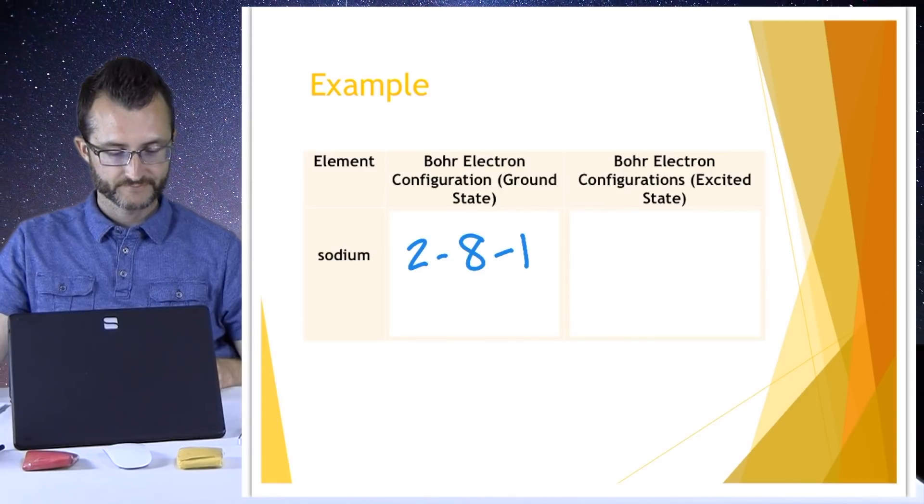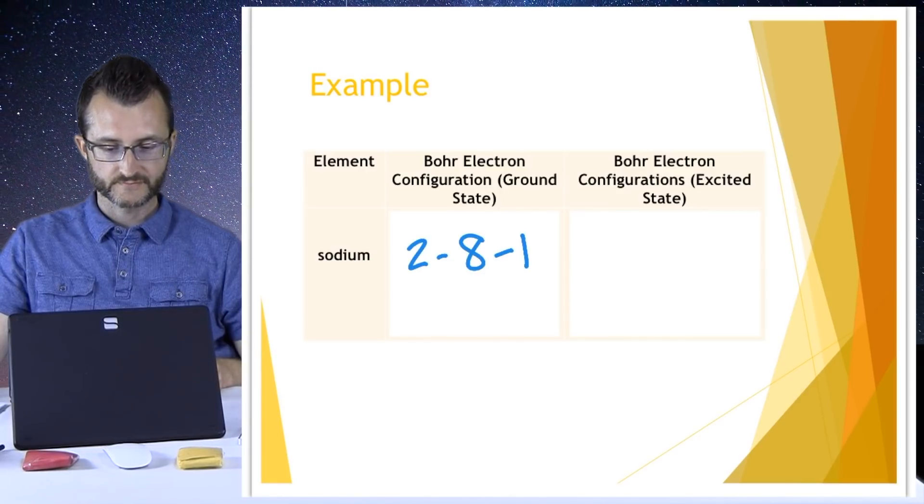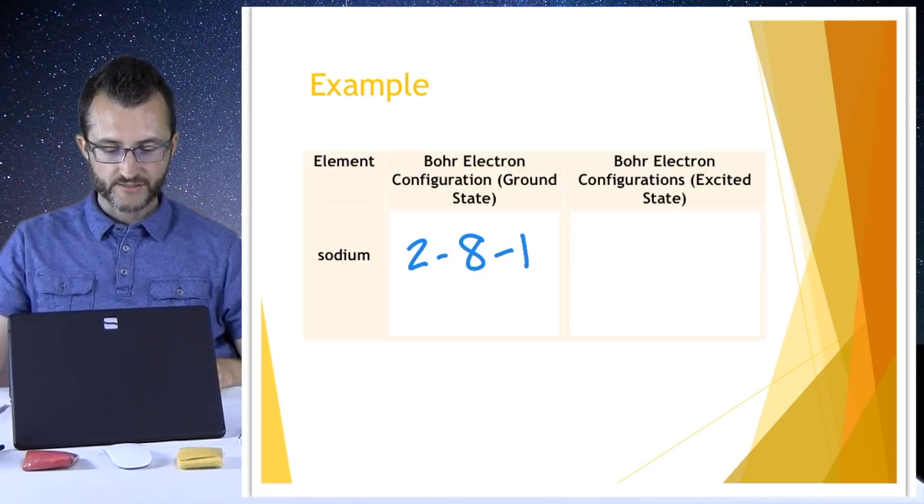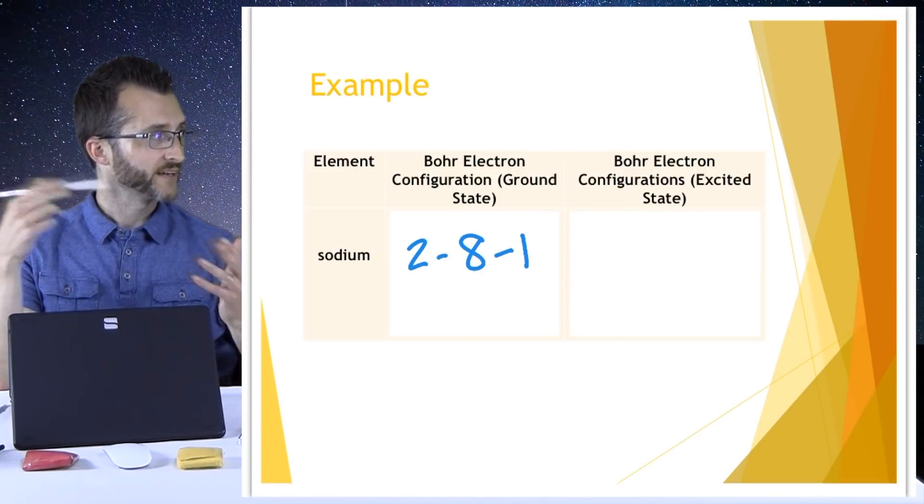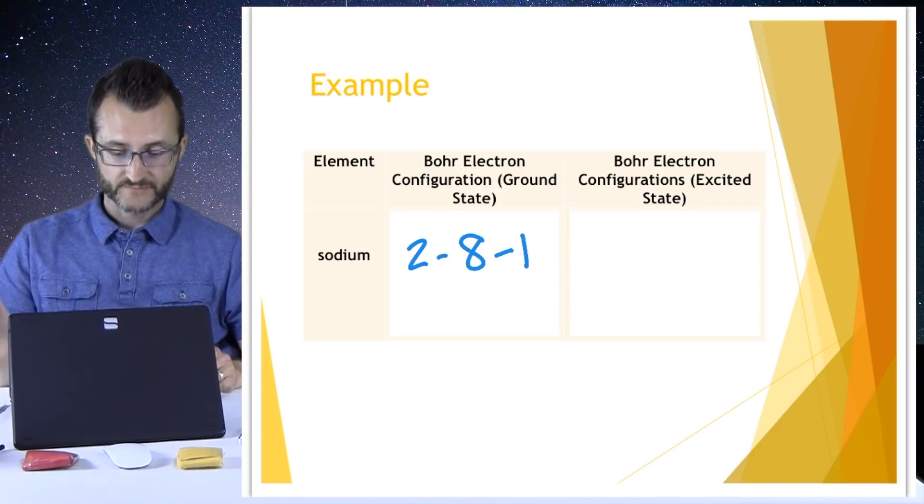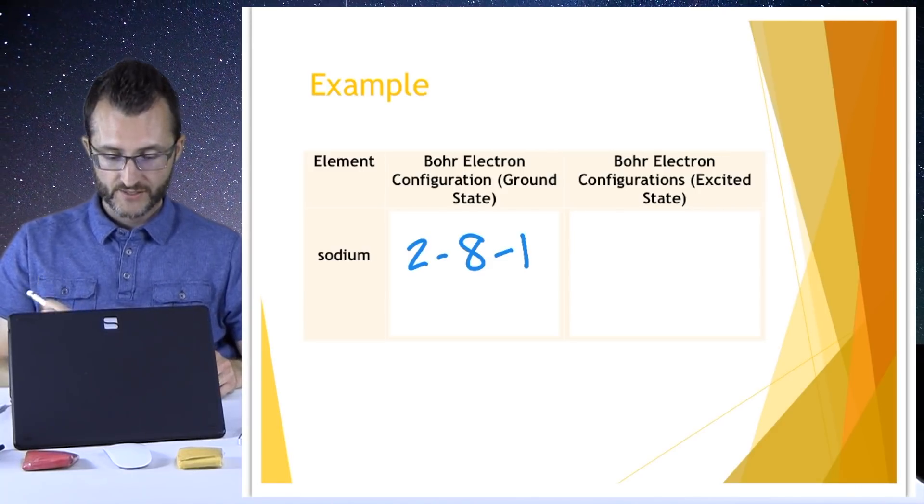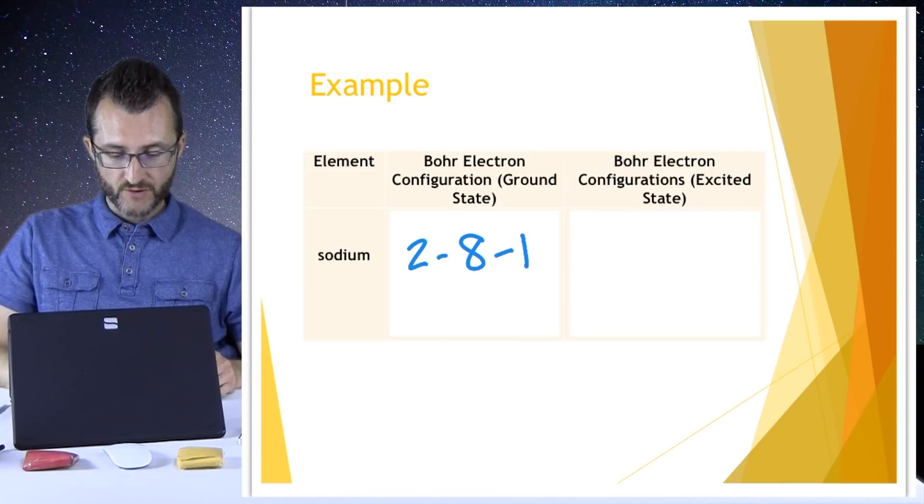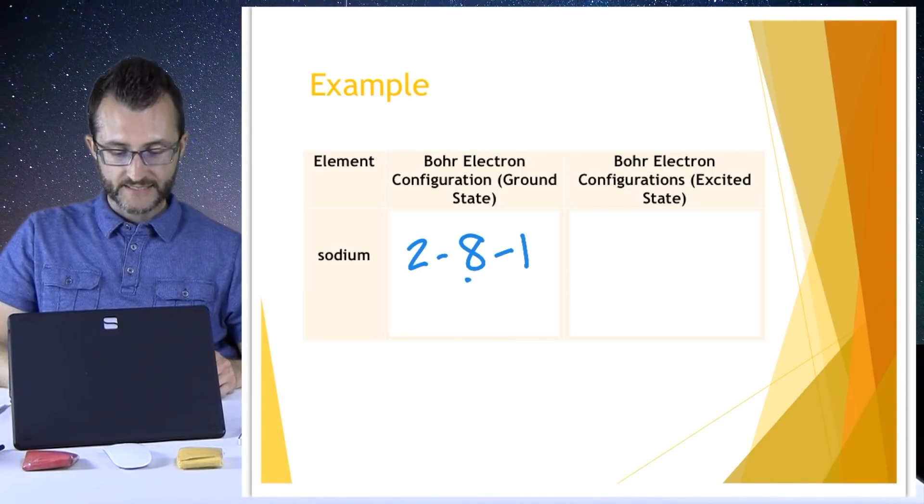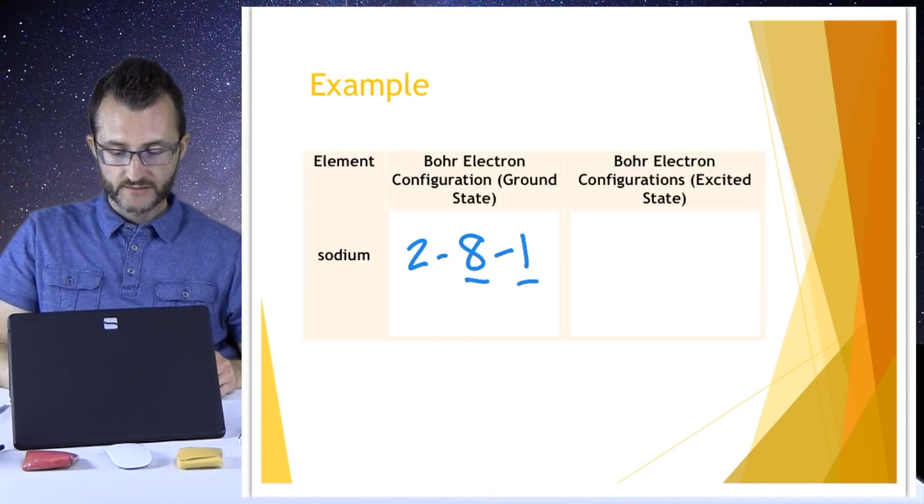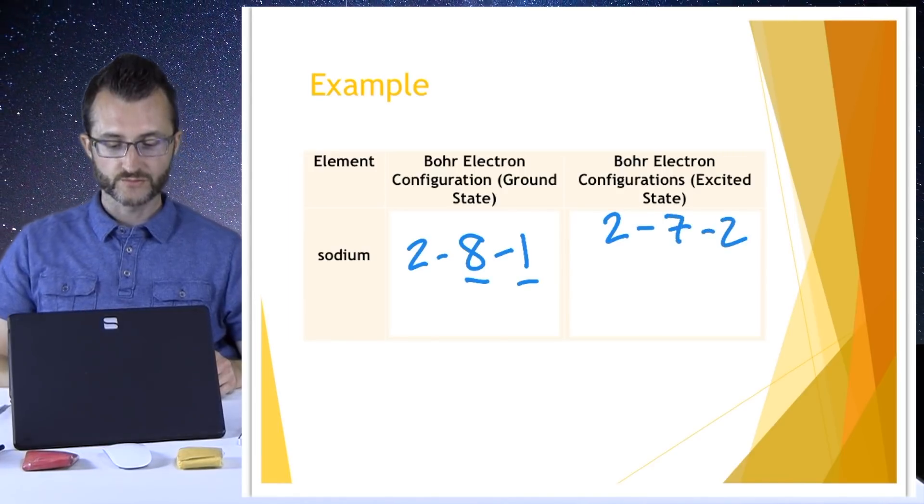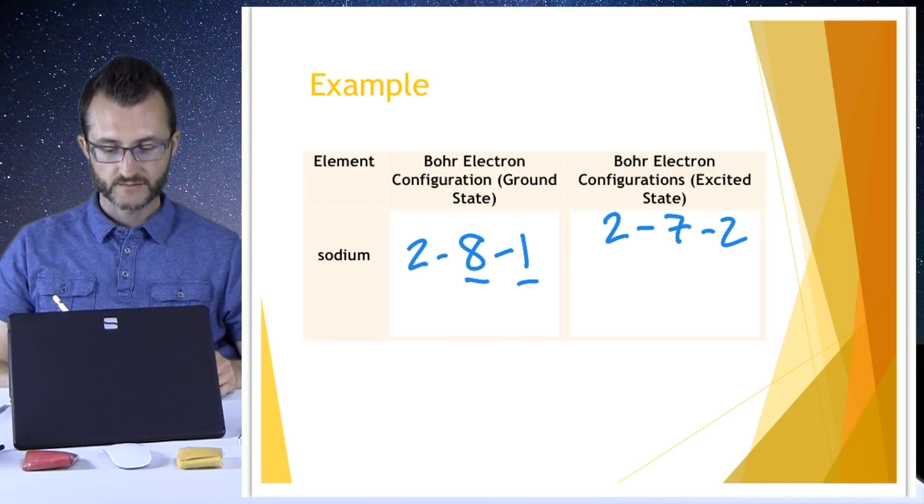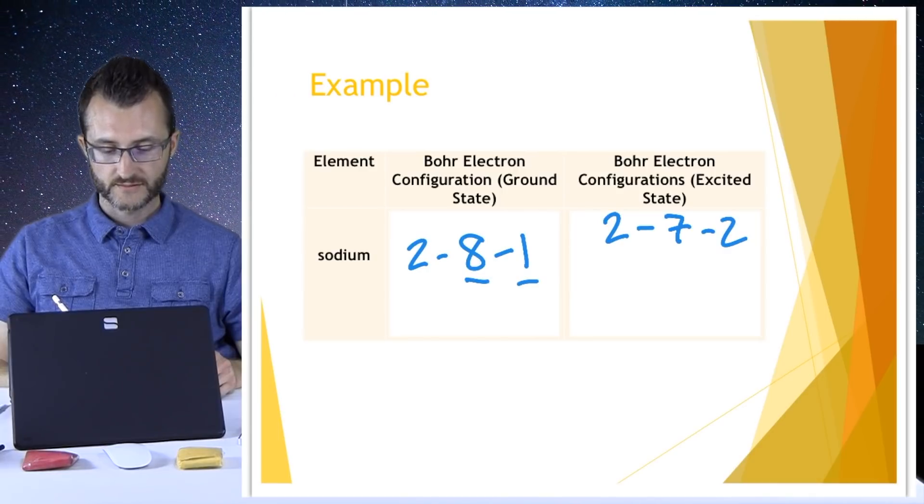So what does it mean for an element to be in the excited state? I have to promote an electron from low energy to high energy. So I'm going to try one. Maybe I move one from the second to the third and I go 2-7-2. That's perfect. That is a good example of an excited state electron configuration.